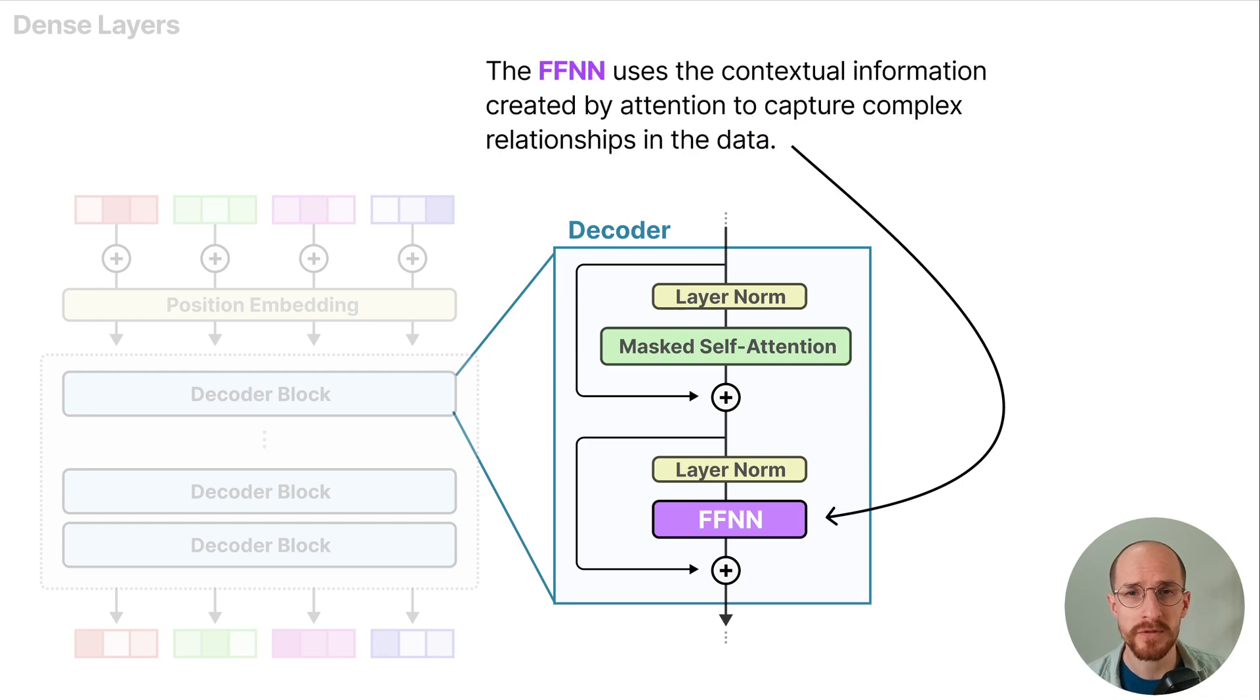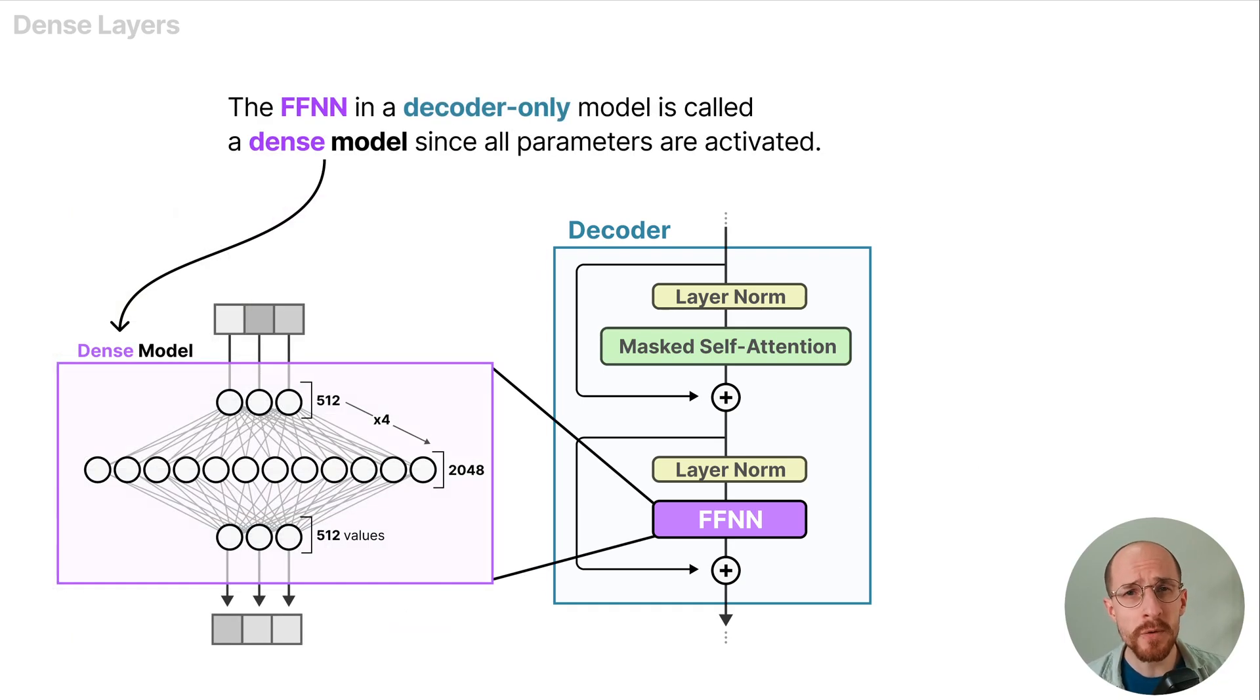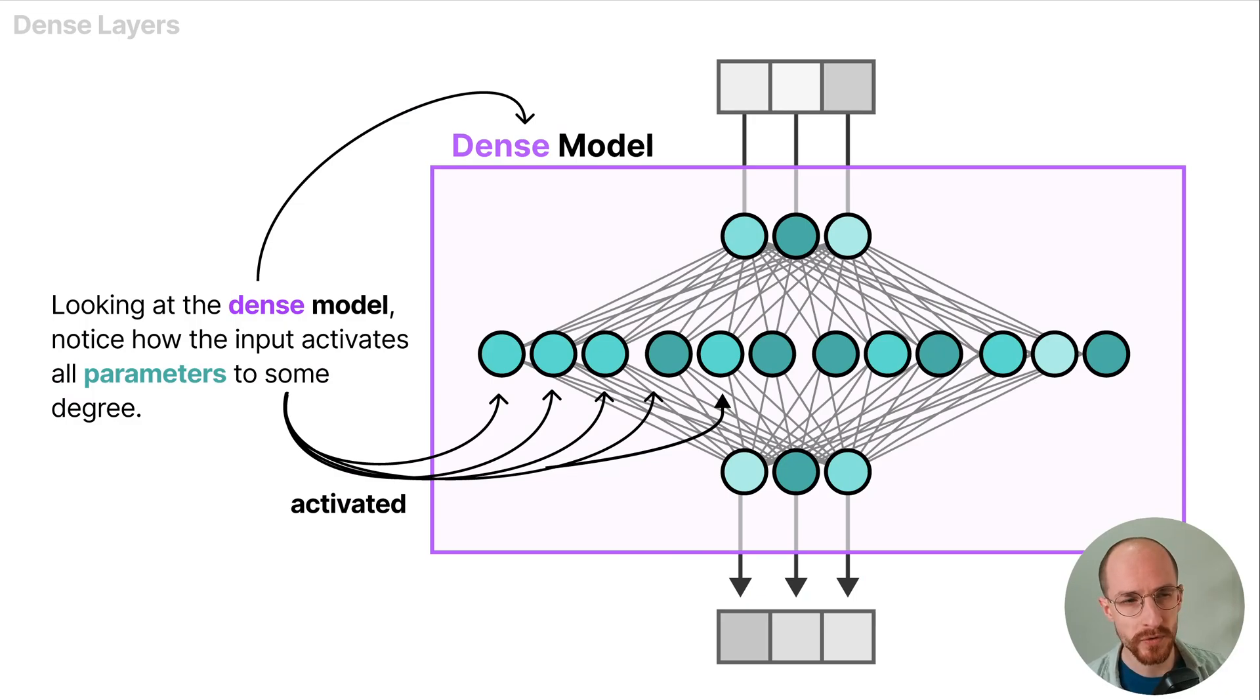The feed forward neural network uses the contextual information created by attention to capture complex relationships in the data. The feed forward neural network in a decoder only model is called a dense model since all parameters are activated. Looking at the dense model notice how the input activates all parameters at least to some degree.